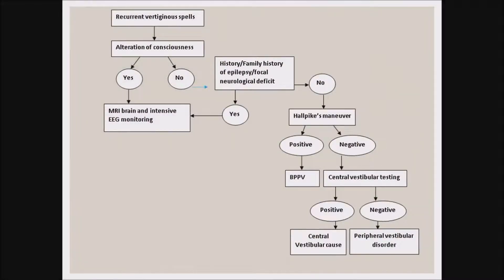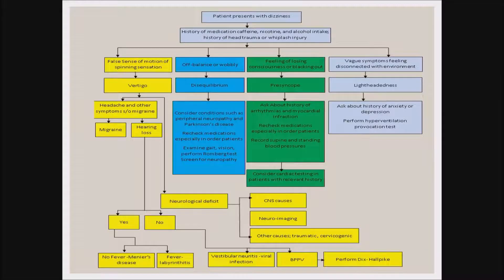For recurrent vertiginous spells, the diagnostic approach begins by determining whether consciousness is altered. If yes, proceed with MRI and intensive EEG monitoring. If no, assess for family history of epilepsy and neurological deficits; if present, proceed accordingly. If absent, perform the Dix-Hallpike maneuver — if positive, diagnose BPPV. If negative, proceed to central vestibular testing; if positive, consider central vestibular cause; if negative, consider peripheral vestibular disorder.